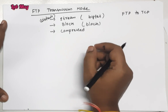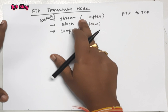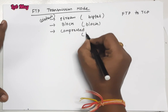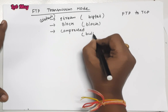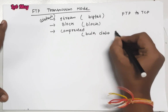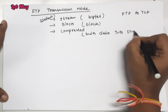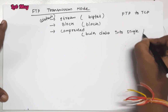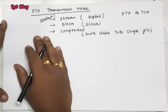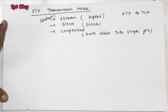In alarmed situations, compressed mode is selected. Otherwise, the default mode is stream mode, where bulk data is transferred into a single file stream. These are the file transmission modes for FTP.